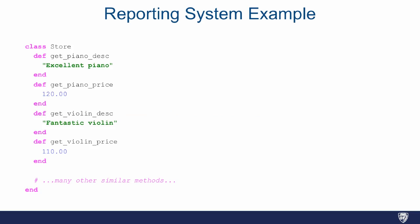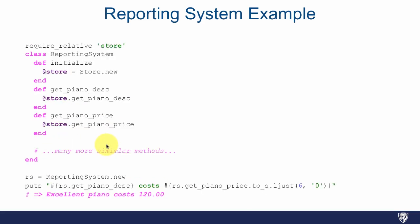So what would this look like? We would have a class called Store, and for example it has methods: get_piano_description, get_piano_price, get_violin_description, get_violin_price, and many, many methods with the same pattern of get this description and get this price. So a naive way of writing the reporting system for such a system...